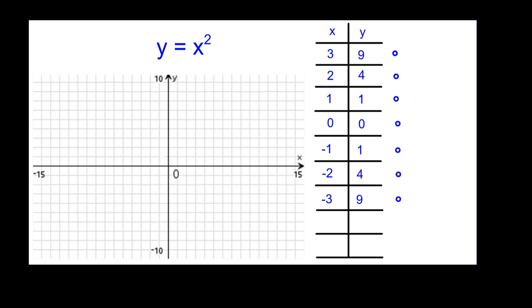Let's go ahead and plot the points. 3 squared is 9, 2 squared is 4, 1 squared is 1, and of course 0 squared is 0. When we square the negatives, we get positives. Do you notice a pattern here in either the table or the graph? Press pause as needed.